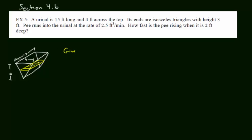Now we're going to look at the problem. What is given? Pee is coming in, so that's going to affect the volume. So dV/dt equals 2.5 feet cubed per minute, which is 5/2 feet cubed per minute. Next, we want to determine what we want to find: dh/dt, the rate at which the height is changing, when the pee is 2 feet deep.